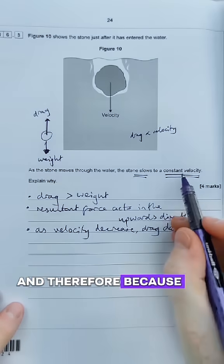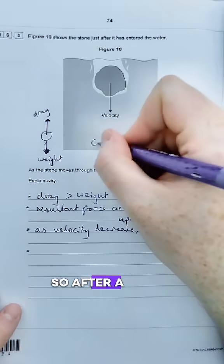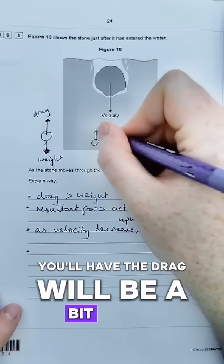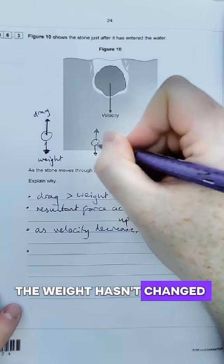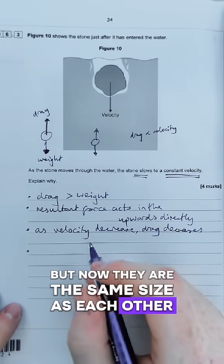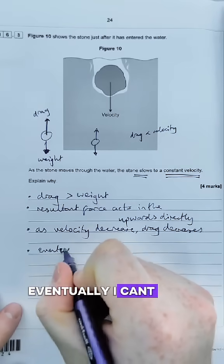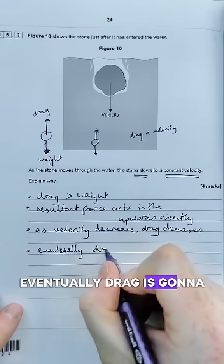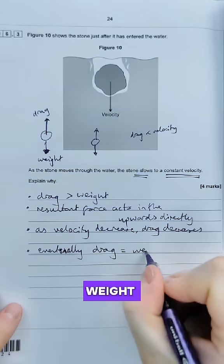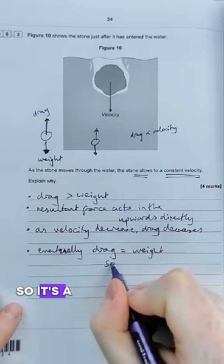Therefore, because it's constant velocity, we know the forces have to be equal at the end. So after a period of time, the drag will be a bit lower. The weight hasn't changed, but now they are the same size as each other. So you'd say eventually drag is going to be equal to weight, so it's a constant velocity.